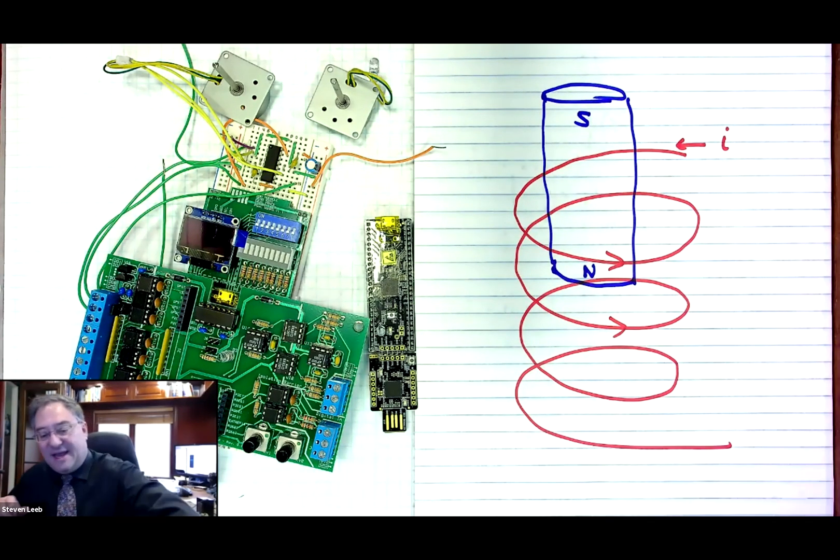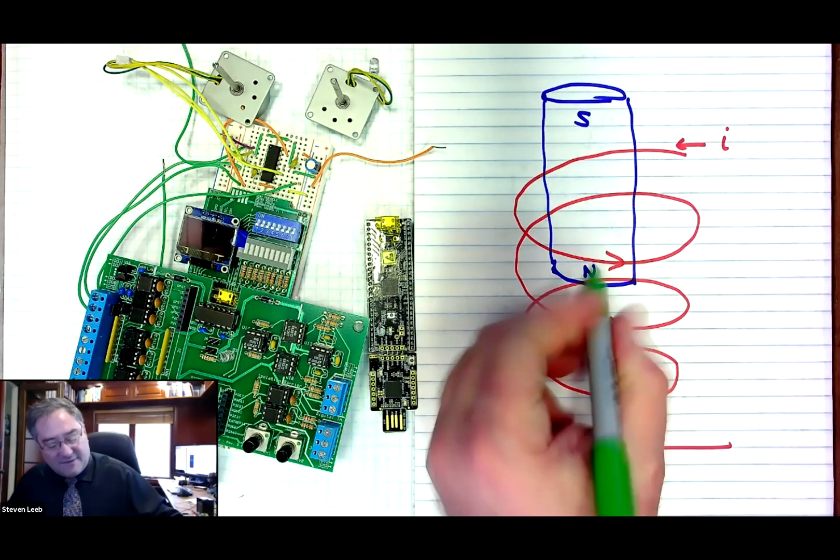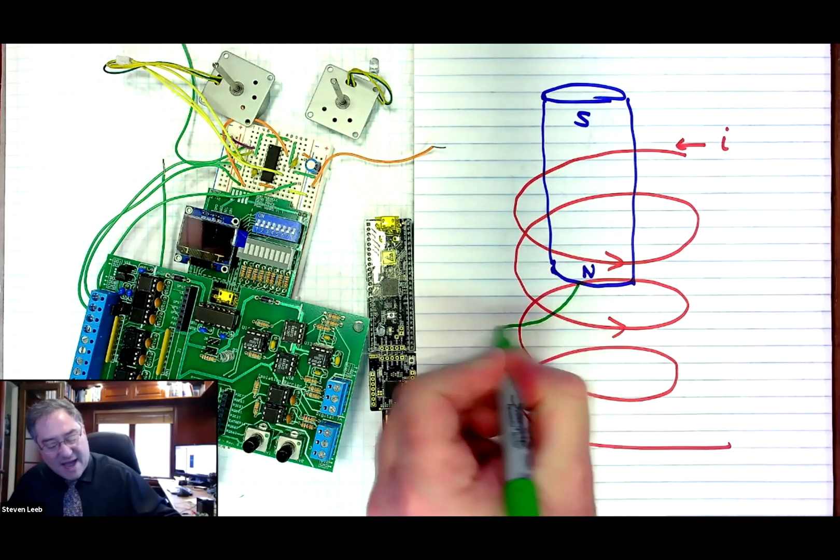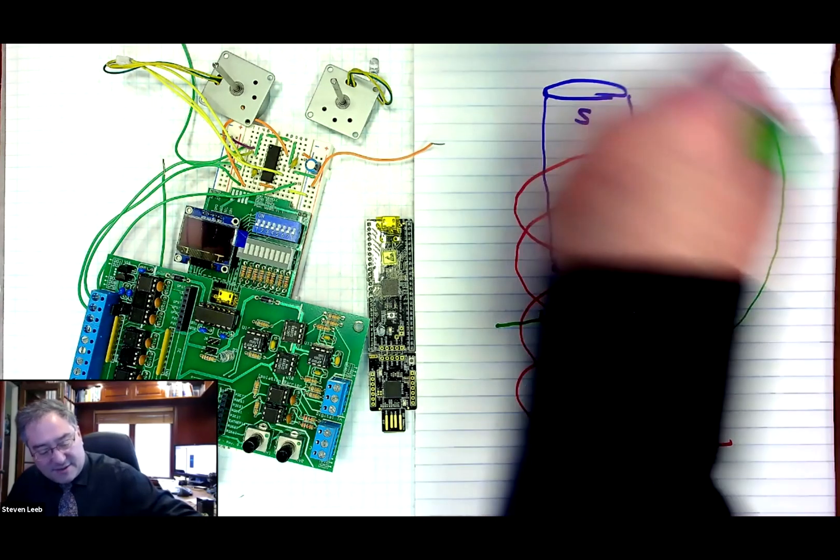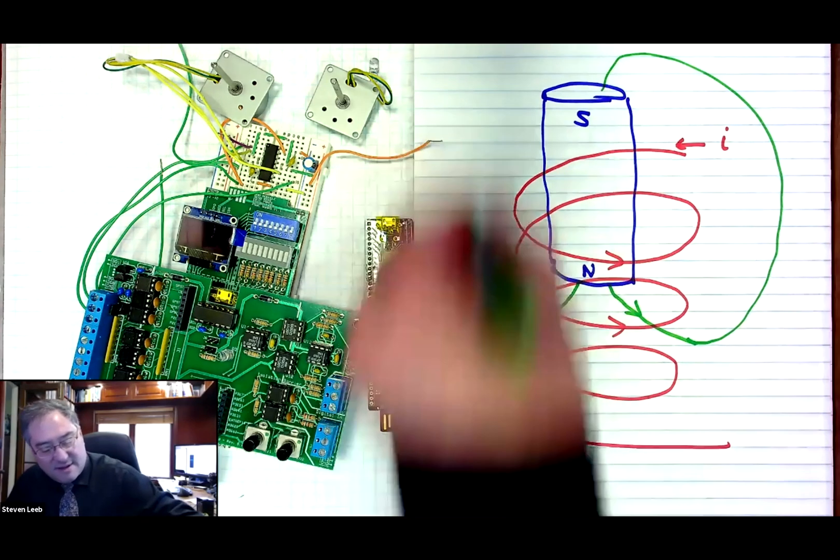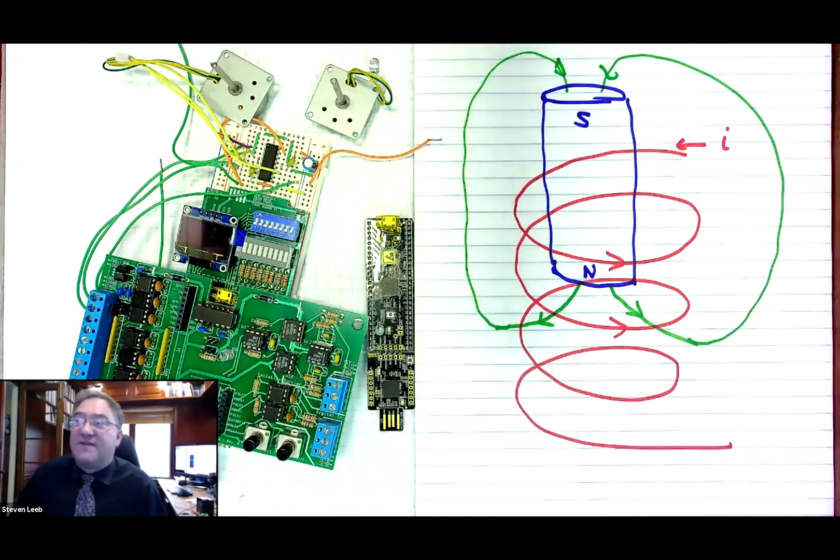And that makes a magnetic field. That magnetic field, by convention, we usually think of as coming out of the North Pole and going around to the top and closing back on the South Pole. If you guys follow me.